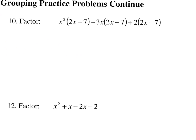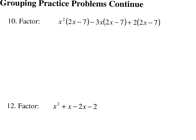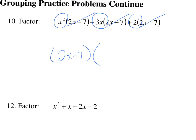On number 10, it's the same type of thing, except now you have three terms. In those three terms, you see the common binomial of 2X minus 7. So you bring that to the front — 2X minus 7 — factoring it out of all three terms. You're left with whatever was multiplied times that: X squared minus 3X plus 2.